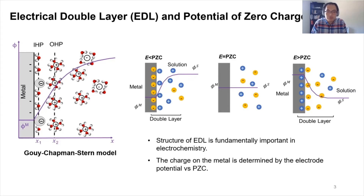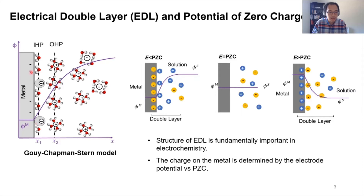Today we're going to talk about the potential of zero charge and also about the electrical double layer. As an electrochemist, the electrical double layer is fundamentally important because it's ubiquitous at all electrode surfaces. On the left here is a Gouy-Chapman-Stern model. When the metal has a negative charge on the surface, it can attract ions of the opposite sign — so it can attract cations to the surface. This is the basis for the electrical double layer, and it's very important in electrochemistry.